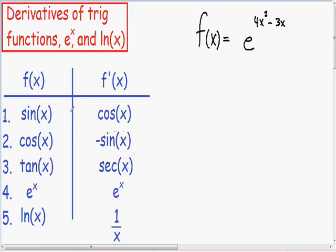So let's just dig right into this example. Here we have the function f of x is equal to e to the 4x squared minus 3x.